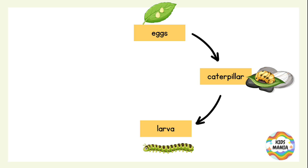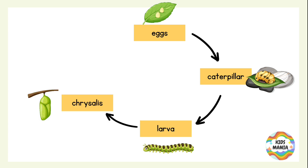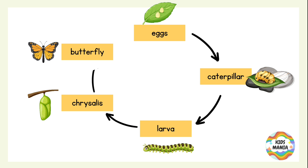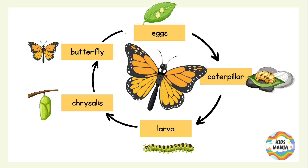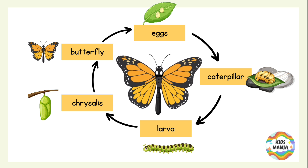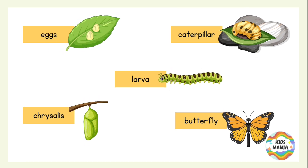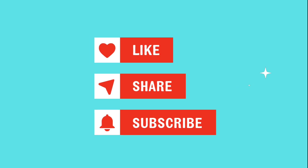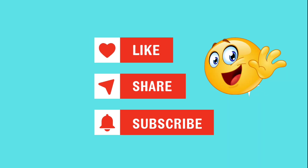Then after eating leaves, it became an adult larva, and changed into a chrysalis, and finally the beautiful butterfly breaks out from the chrysalis to start this butterfly life cycle again. Can you name these five stages of the butterfly life cycle? Now you try. Goodbye!